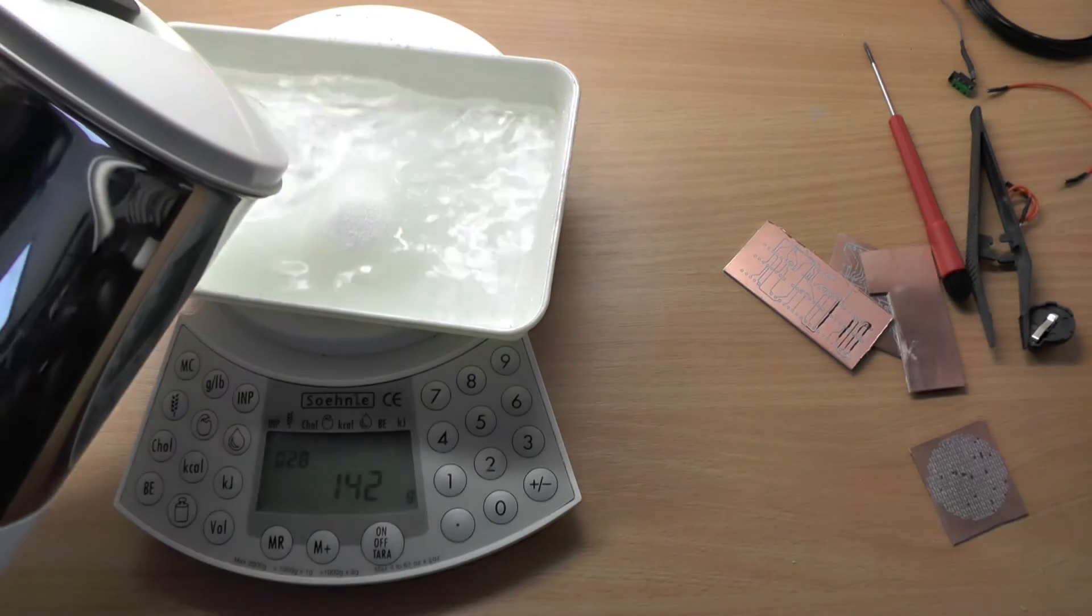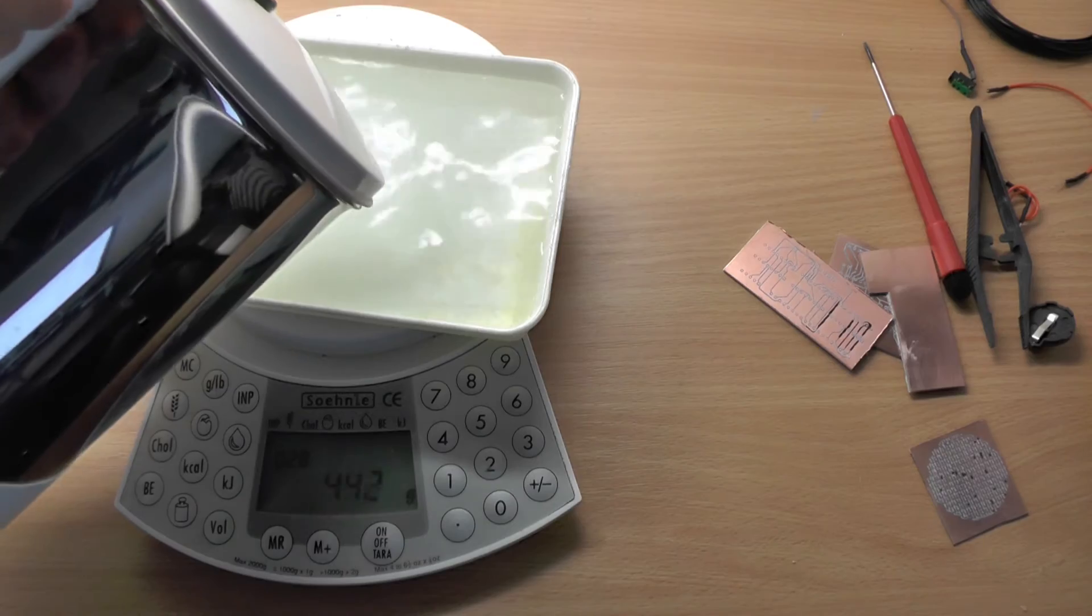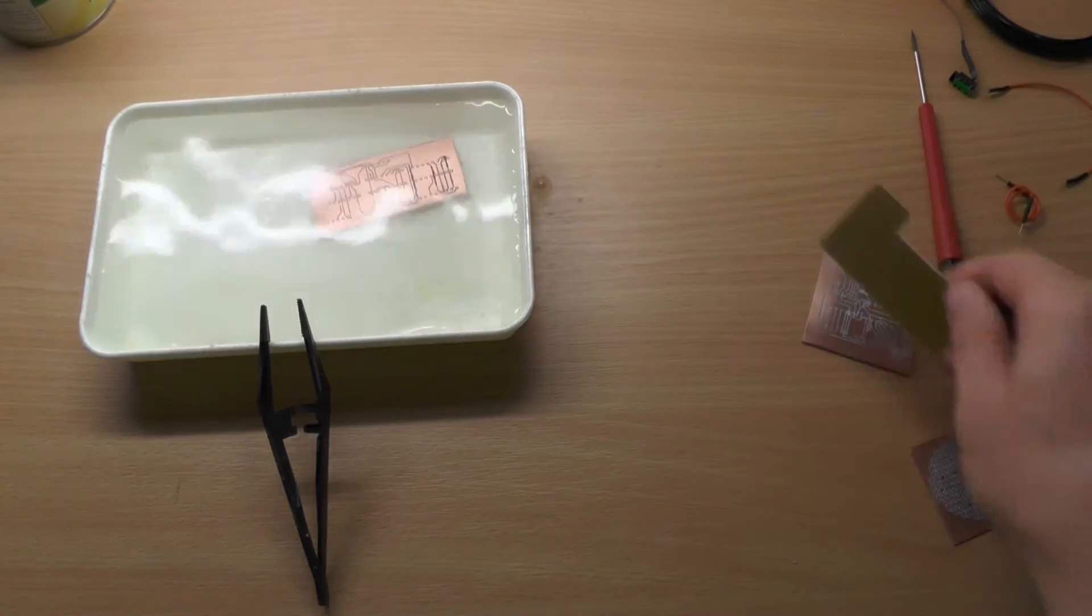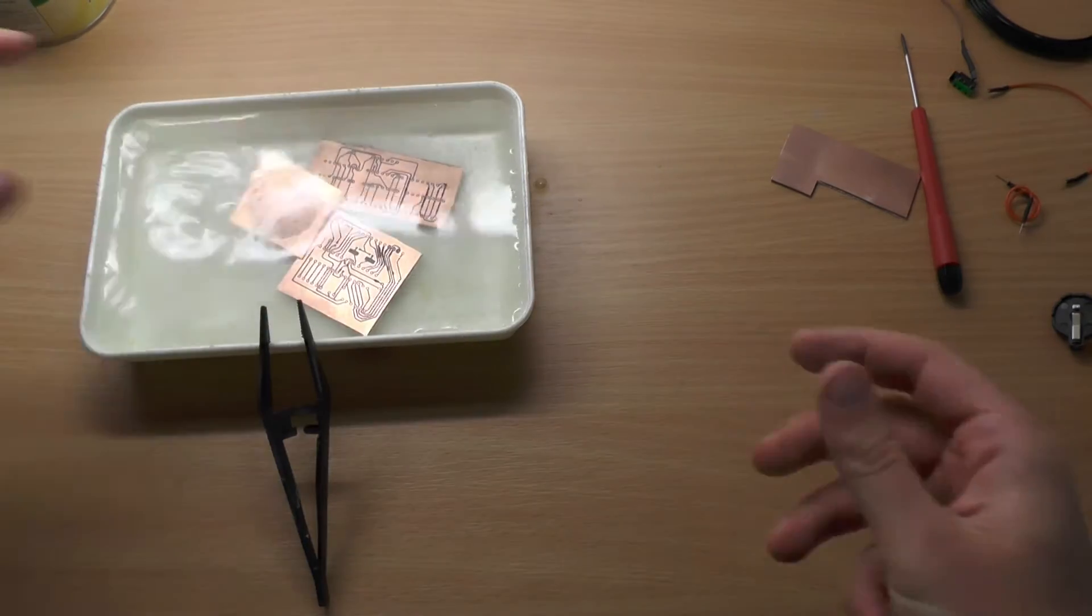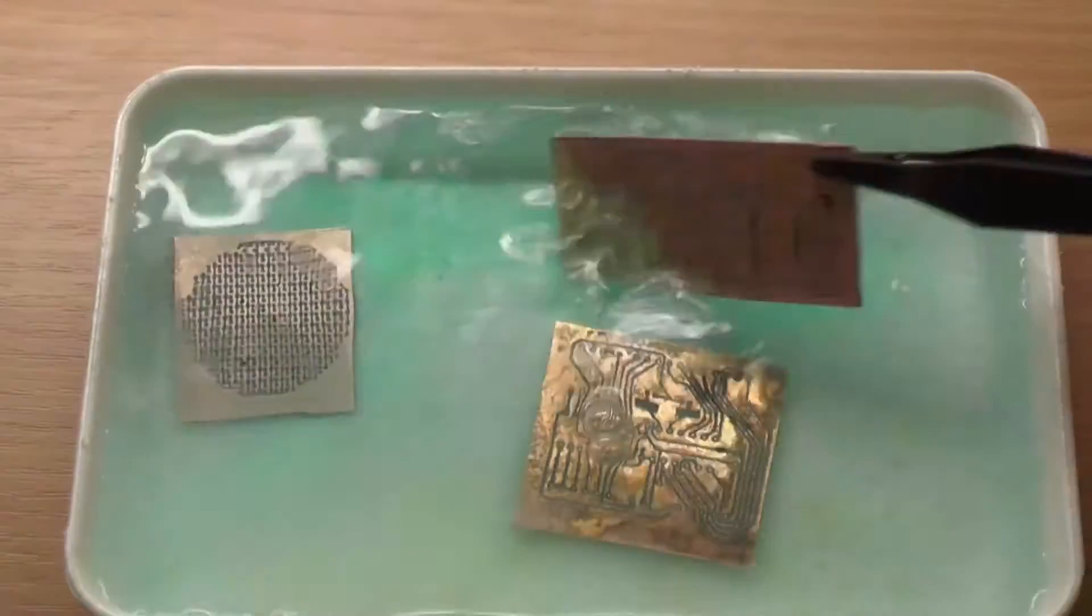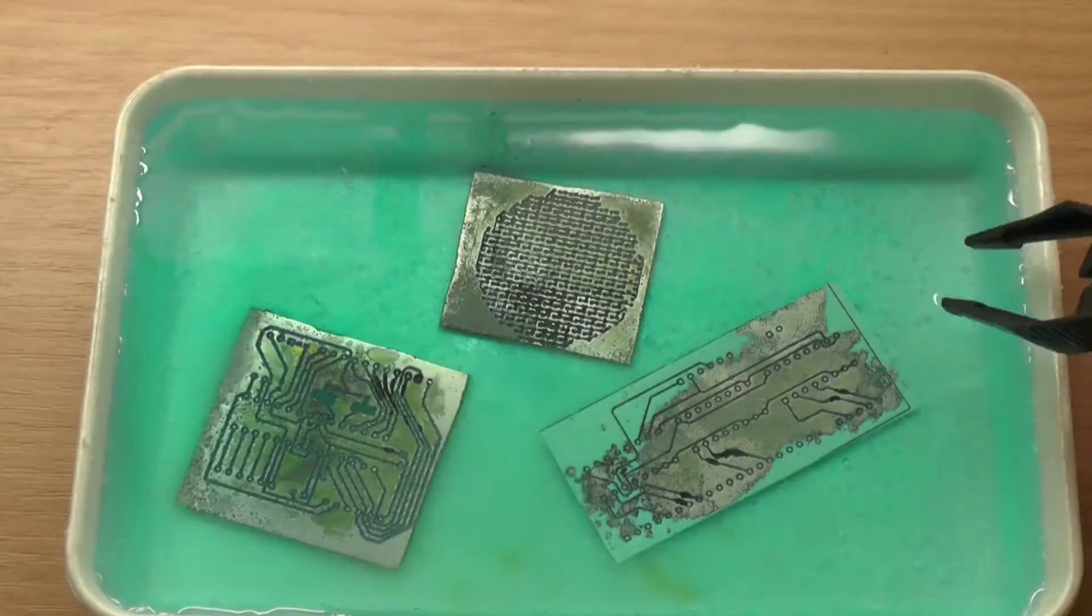I also used the sodium persulfate solution this time. As you can see there are also other boards. I just wanted to do a complete batch at once to save time. One of them is also the main board of the MIDI device which you will see later. As the solution saturates and cools down, the slowdown of the etching process is really noticeable.